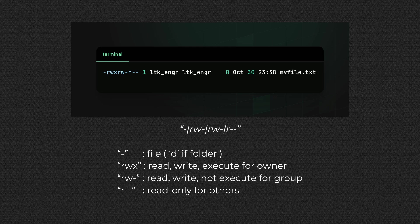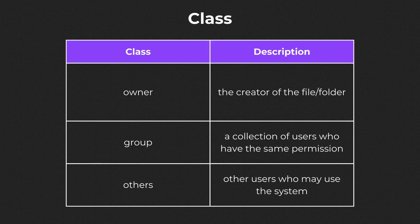When we talk about permissions, there are two things to consider. Number one is class, which answers the question of who is accessing our files and folders. There are three classes: owner, group, and others. Owner is the one who created the file or folder, but of course you can change ownership. Look for the chown command on how to deal with that.